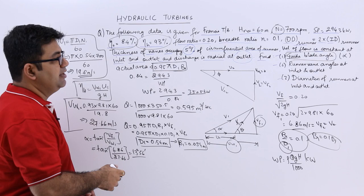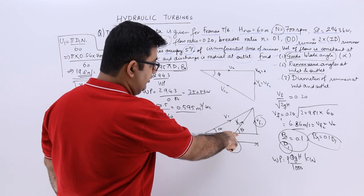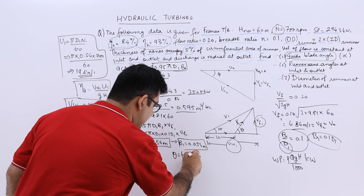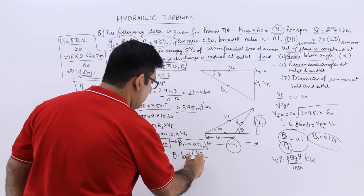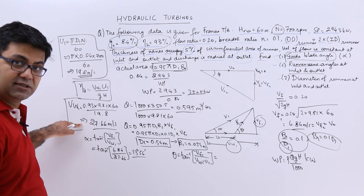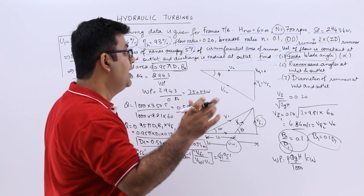For the runner vane angle at inlet (theta), from the inlet velocity triangle: theta = tan⁻¹(VF1 / (VW1 − U1)) = tan⁻¹(6.86 / (27.66 − 19.8)) = tan⁻¹(6.86 / 7.86) = 41 degrees 5 minutes.